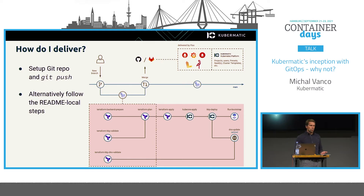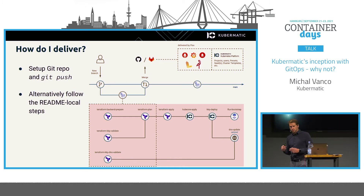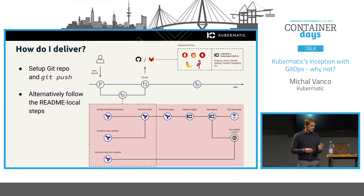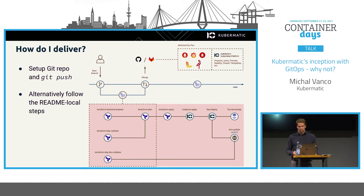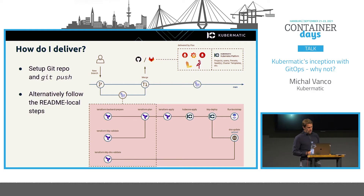For delivery there are two options. You can use the full automation pipeline: take the directory content, initialize your Git repository, create some secrets or CI/CD variables for GitLab, push it, and watch the pipeline. The pipeline stages are: run Terraform, apply KubeOne, install KKP, then bootstrap Flux. Once Flux is initialized, all resources under the Flux directory get delivered to your Kubernetes cluster.